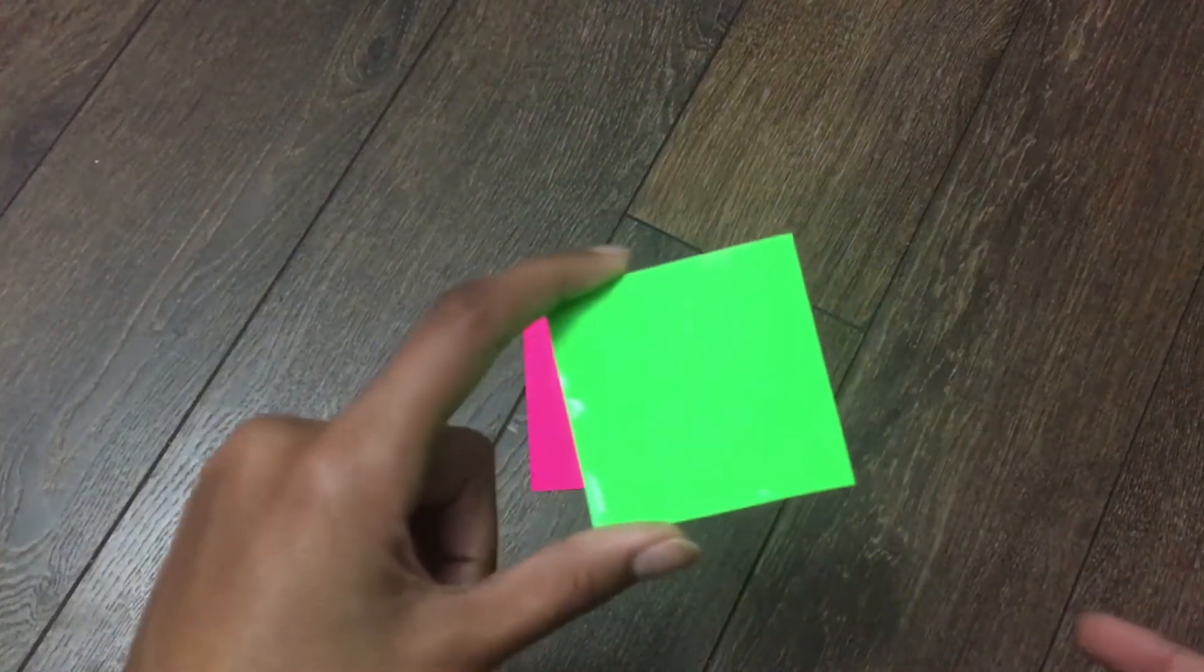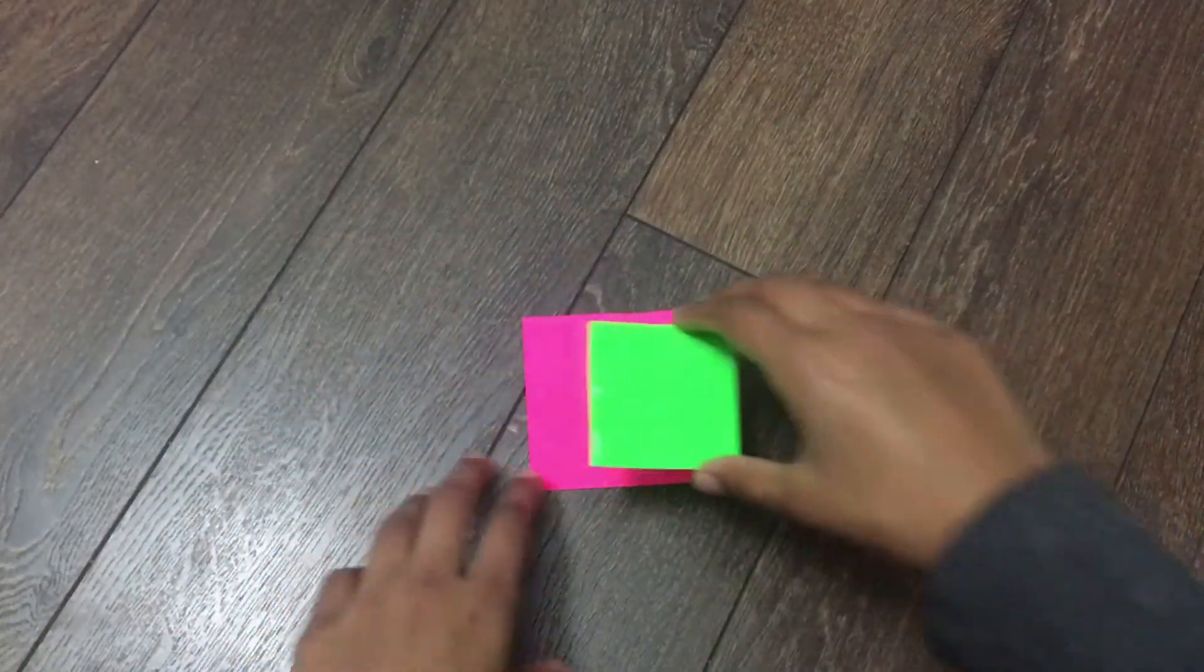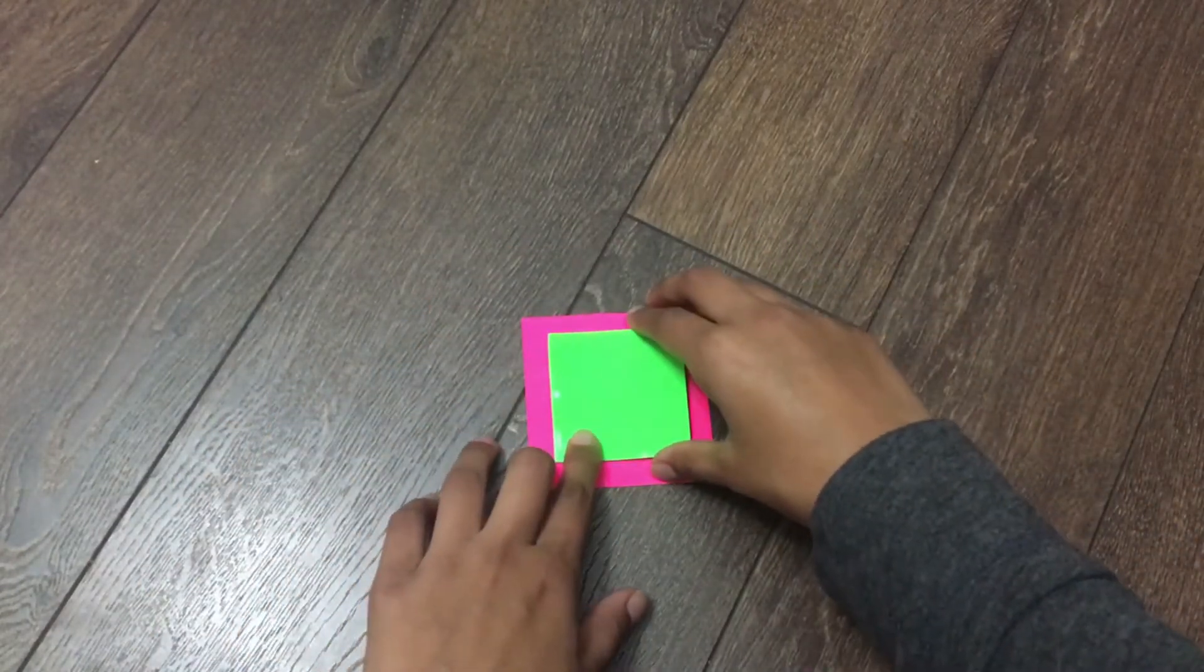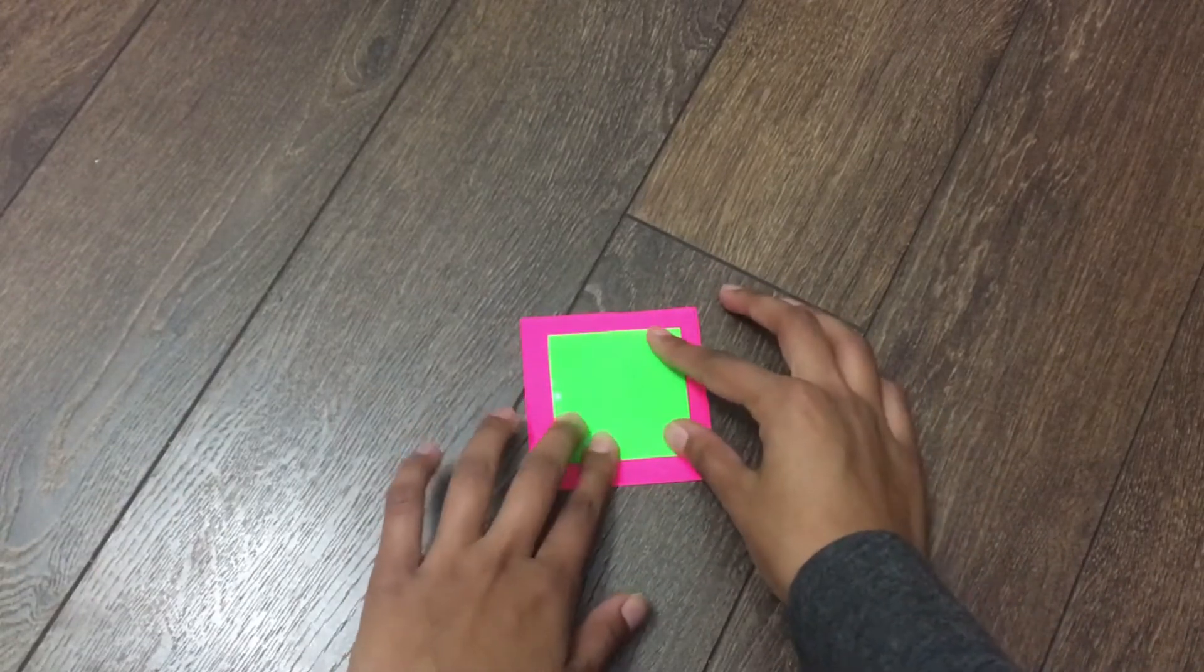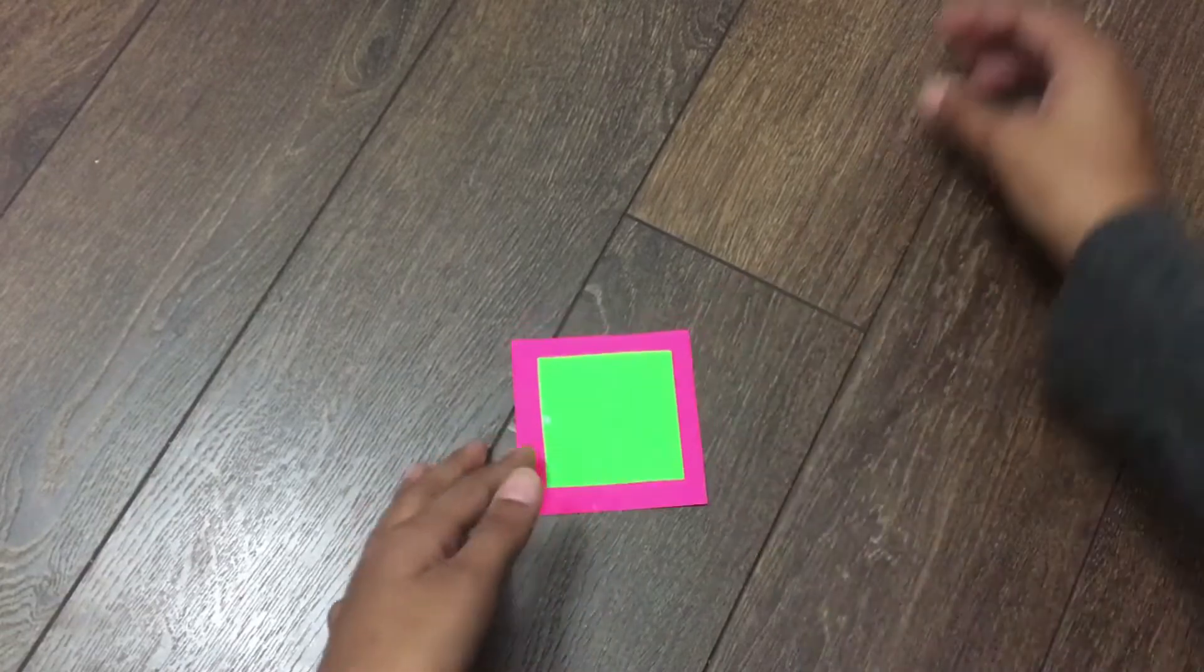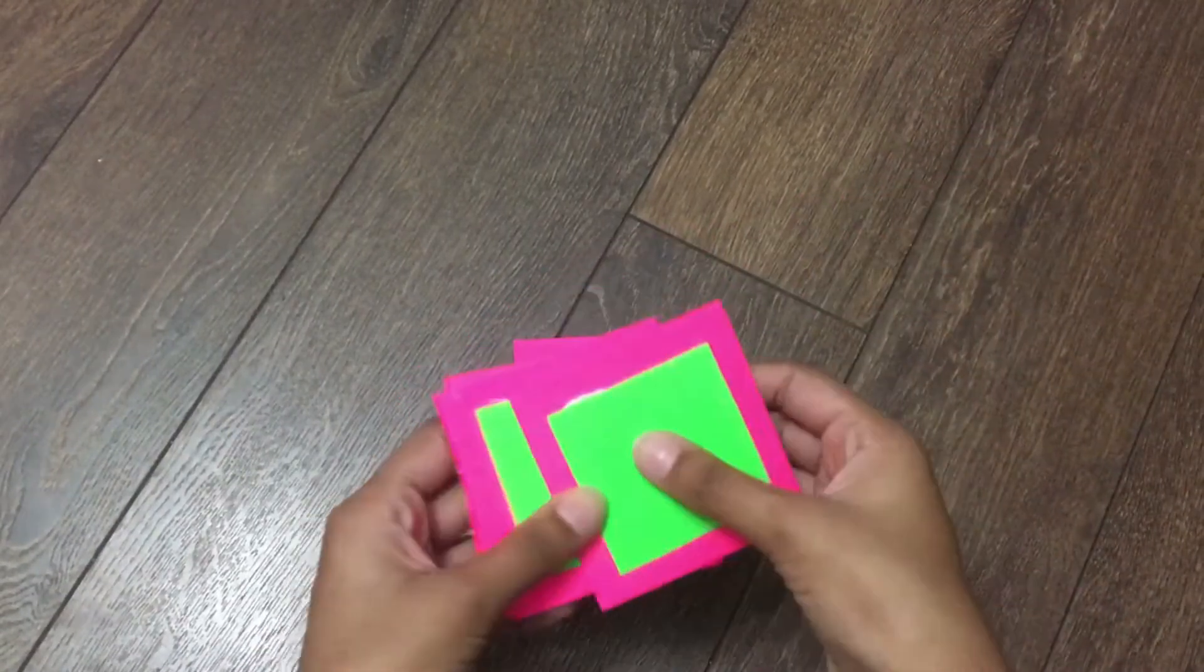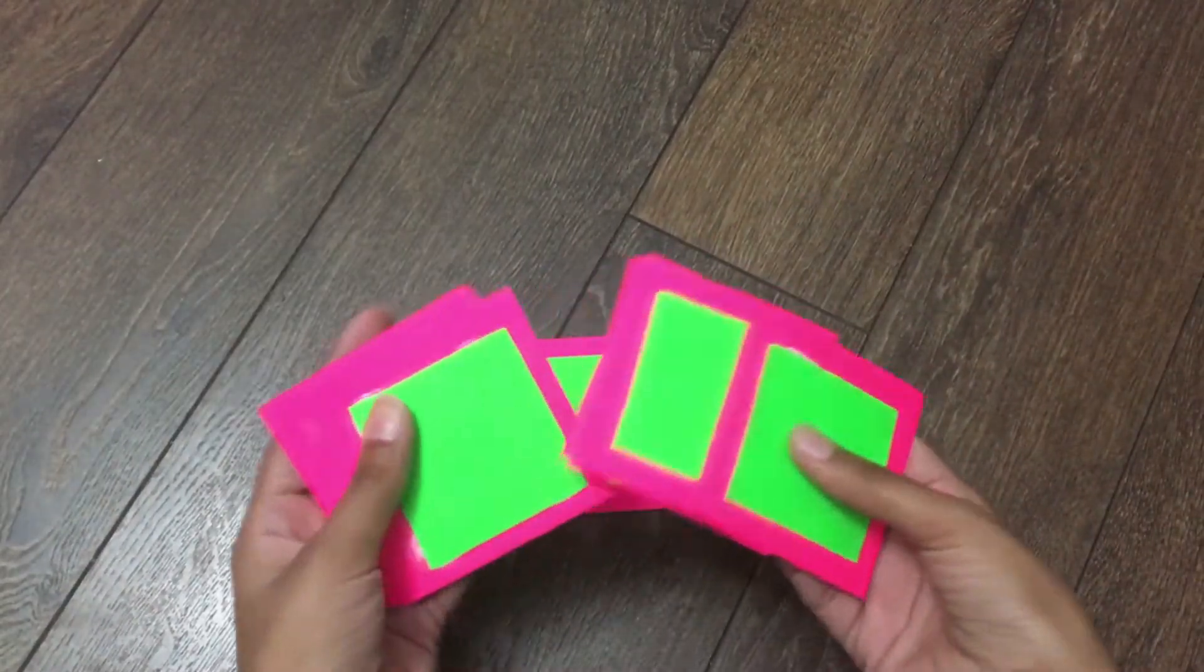The bigger one goes on the bottom and the smaller one on top. And you're gonna want to do this to all of the pieces so you should have nine of them.